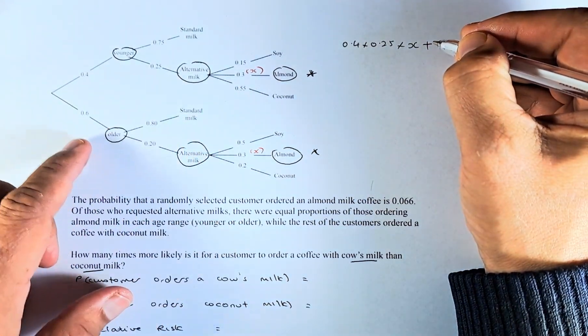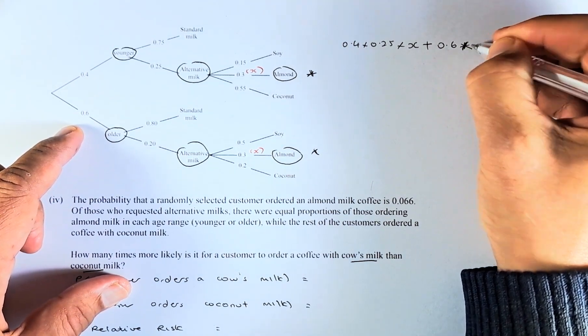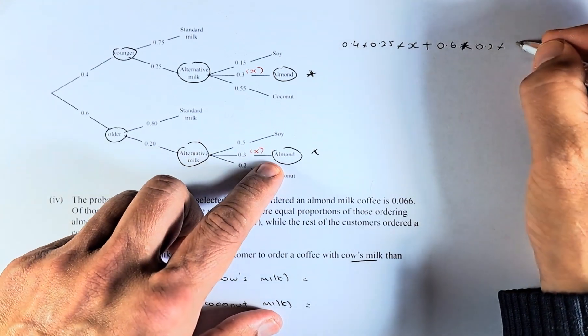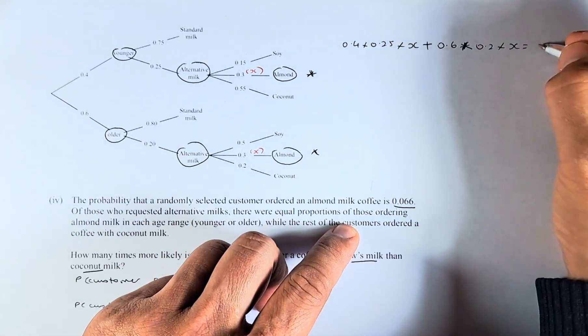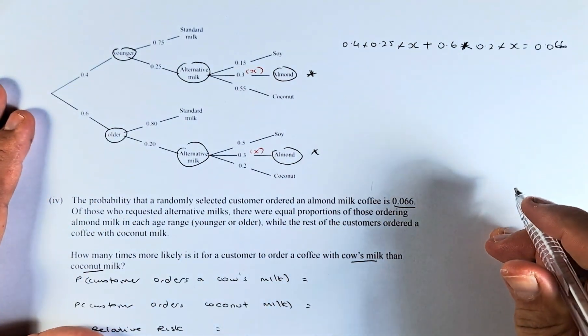Plus, the second one is 0.6 multiplied by 0.2 multiplied by x. That will give us a total of 0.066. Okay, now we simplify them.